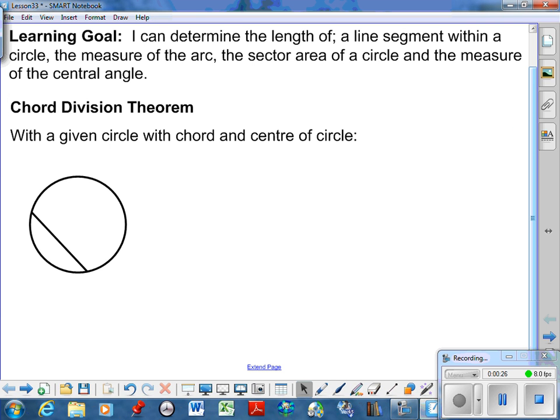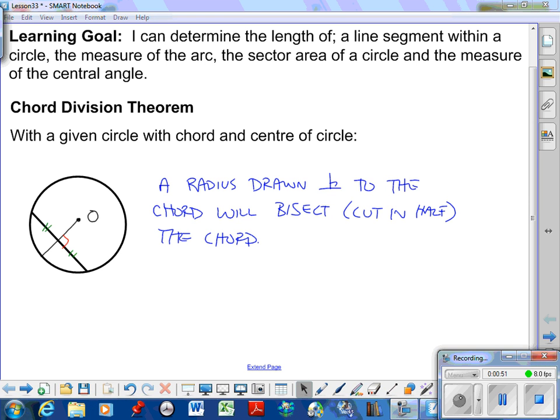Chord division theorem is where I want to start. With a given circle with a chord and center of circle, I need to draw in my center here. If I construct a radius such that it passes through the chord at a right angle, the chord is then divided in half. Any radius that's drawn perpendicular to the chord will bisect it. Bisect means simply to cut in half, and that's our chord division theorem.